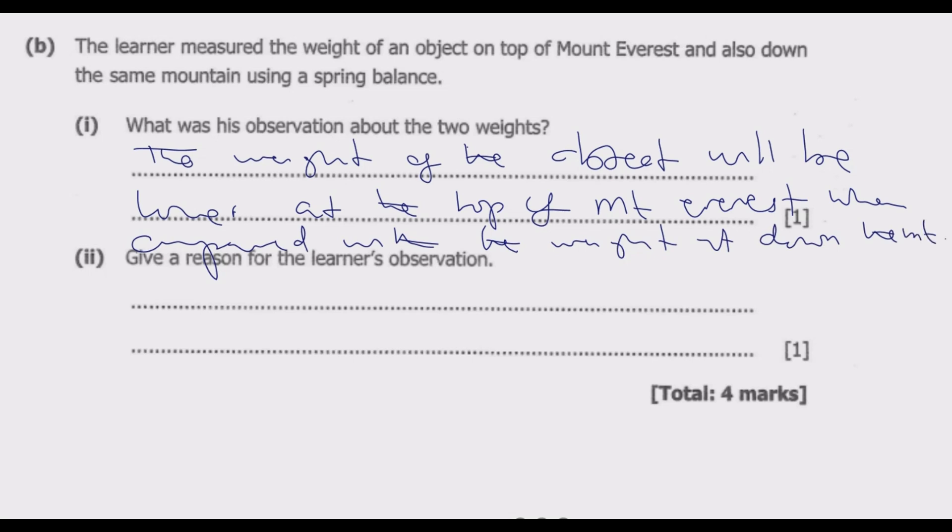Then give the reason for the learner's observation. This is because the gravitational pull reduces as you move up away from sea level. That's why on the moon there is almost no gravity.